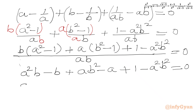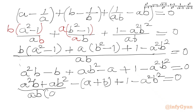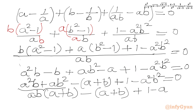Rewriting the LHS: a²b + ab² − a − b + 1 − a²b² = 0. We can write −a − b as −(a + b), giving us a²b + ab² − (a + b) + 1 − a²b² = 0. Taking ab common from the first two terms: ab(a + b) − (a + b) + 1 − a²b² = 0.